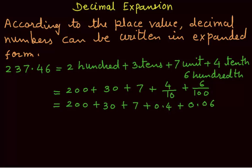Let me take another example as 125.008. Now, here 1 is at 100th place, so it will be 100. 2 is at 10th place, so it will be 20. 5 is at 1's place, so it will be 5.